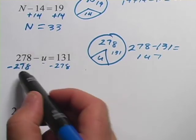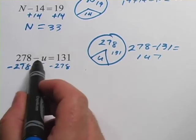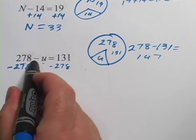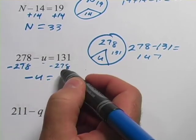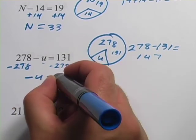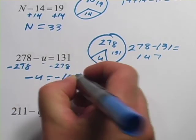Over here, a 278 minus 278 is zero. What you get is a negative u. You have to leave that minus sign there. And over here, 131 minus 278, you can try that in your calculator. It comes out to negative 147.